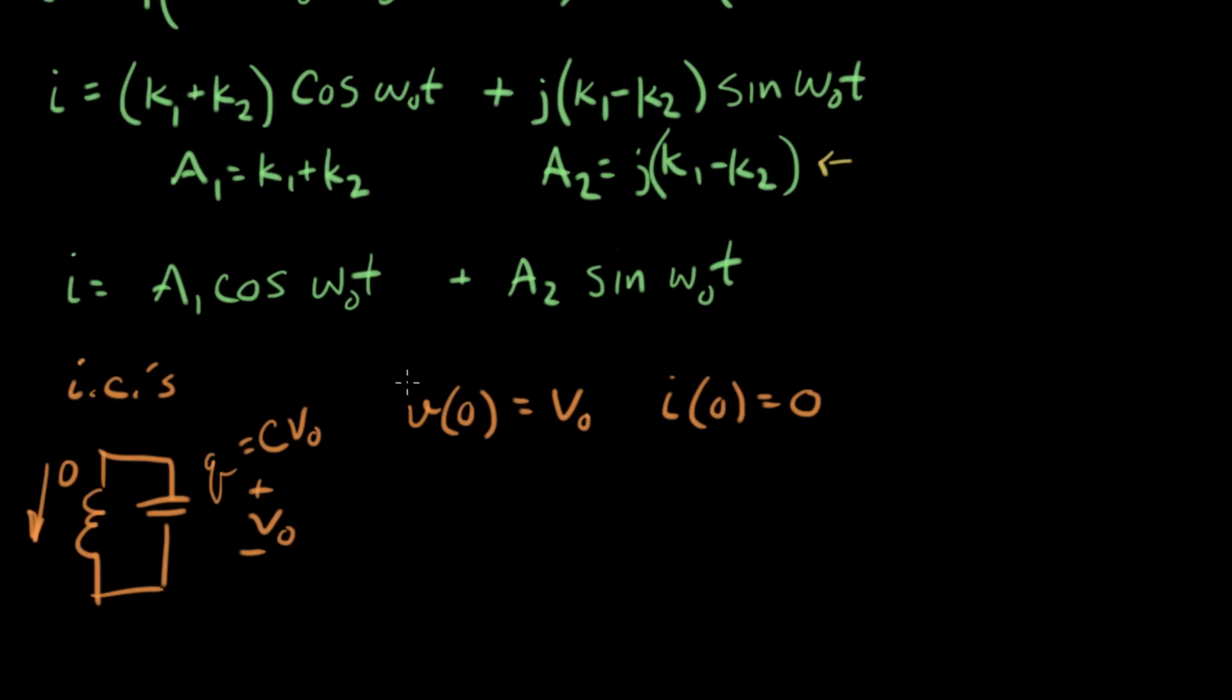Now we're going to use the initial conditions to figure out our two constant values, A1 and A2, that are in our proposed solution for current for the LC circuit.